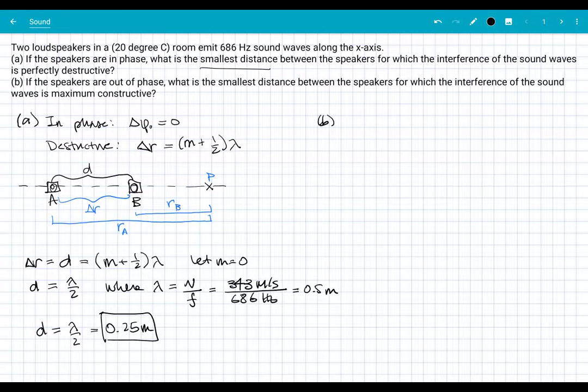Part B tells us that the speakers are out of phase. Let's assume that means completely or exactly out of phase. That tells us that the initial phase difference is equal to pi. Make sure you're able to interpret what in and out of phase means. If they're out of phase by two pi, that actually means they're in phase. Pi means they're exactly out of phase with each other.